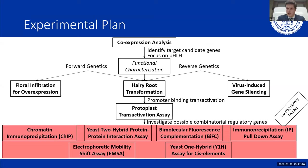Our experimental plan: first, co-expression analysis to identify candidate target genes. Next, functional characterization of BHLH92 using floral infiltration for overexpression, hairy-root transformation, and virus-induced gene silencing (VIGS). From there, we examine promoter binding and transactivation using a protoplast transactivation assay, followed by investigation of possible combinatorial regulatory partners using a toolbox of methods.